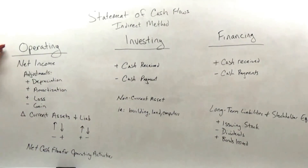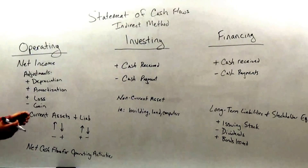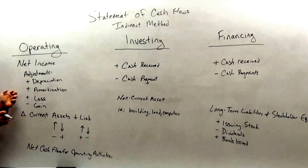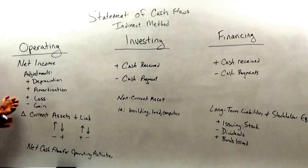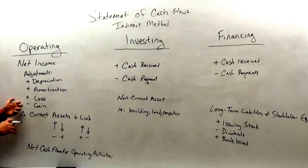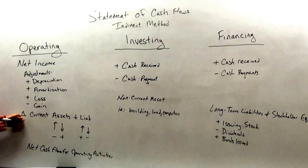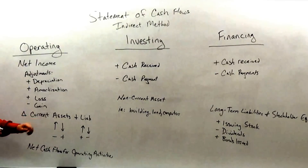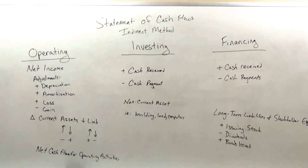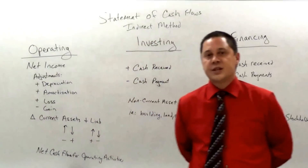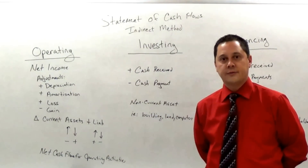To review: the operating activity starts with net income, then we make adjustments — adding back depreciation, adding back amortization, adding any loss we took away, or subtracting any gain we had — and then account for changes to current assets and current liabilities. This is the indirect method for the statement of cash flows. I'm Dr. Fred Sutton. I hope you enjoyed this video.